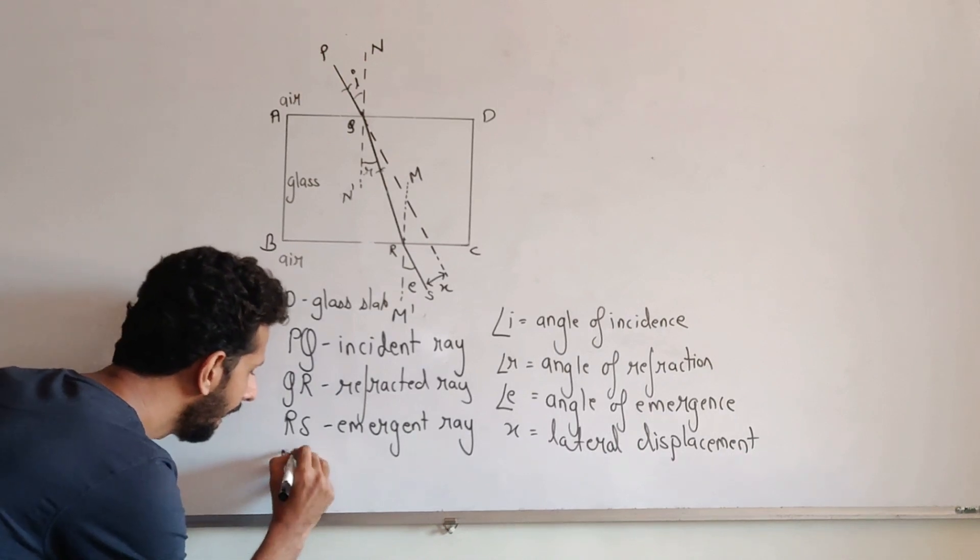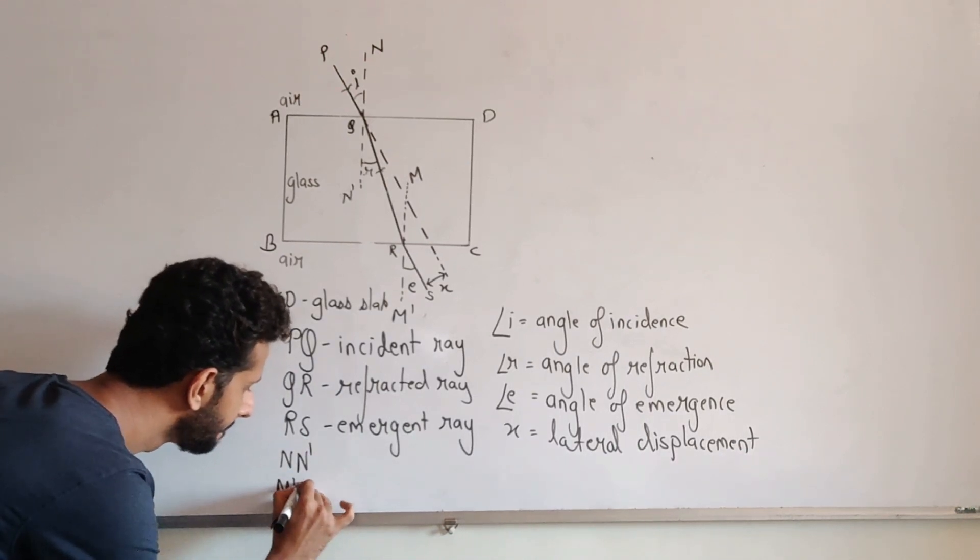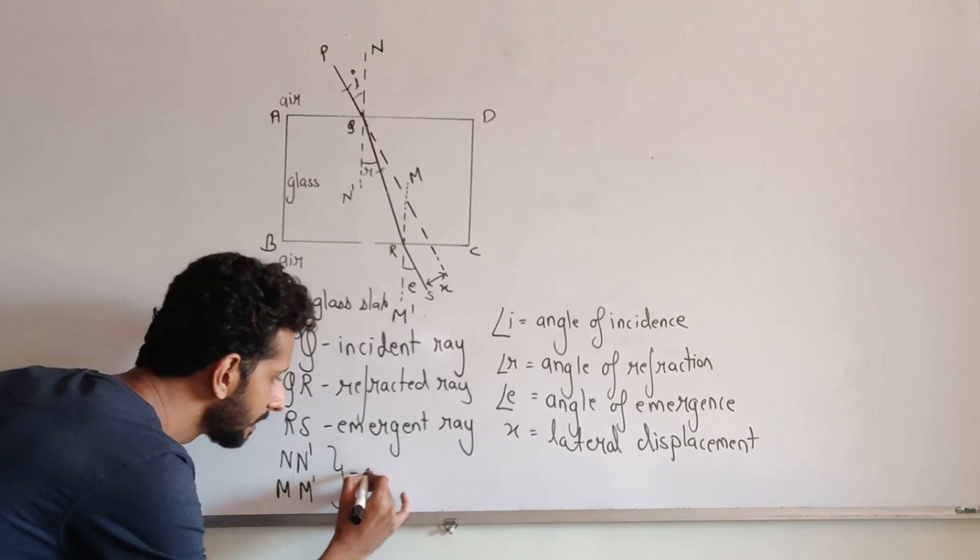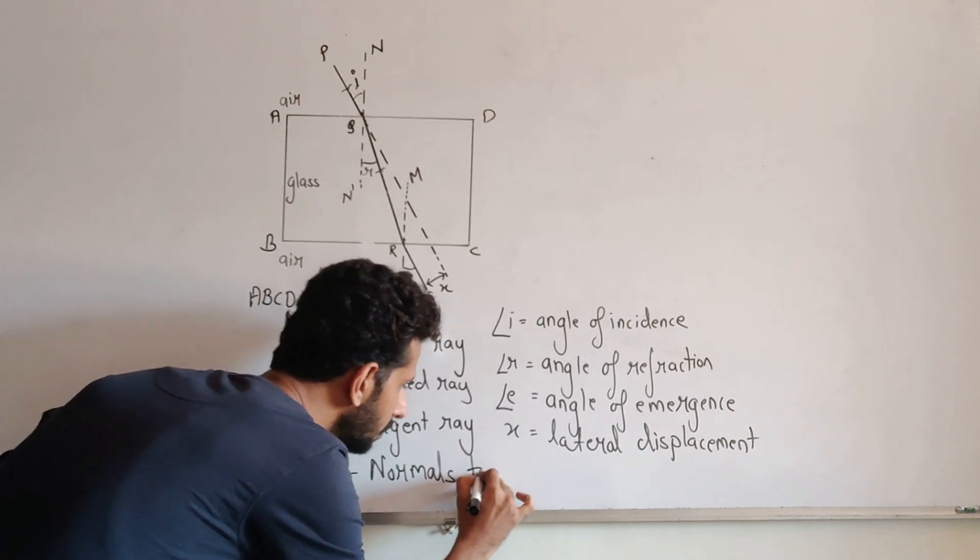And N, N prime, N double prime are the normals to the surface.